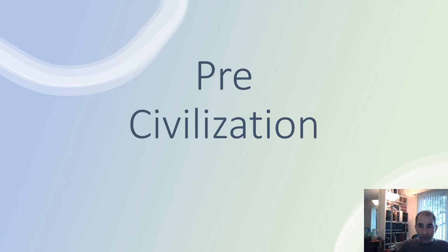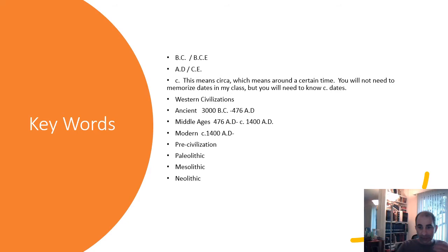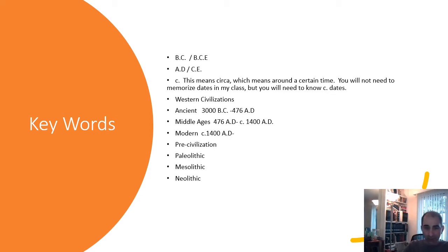All right everyone, here we go with our first lecture for the semester. The topic is going to be about pre-civilization. The way this is going to work: you'll see some slides, and anytime you see keywords, you pause and get them all down. The first few are dating terms — not too important — but as we go through the semester, a lot of the keywords will be names of people or battles.